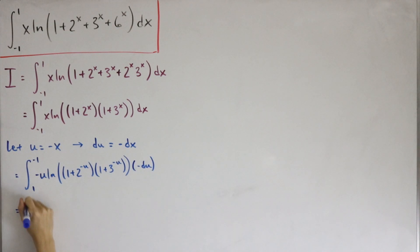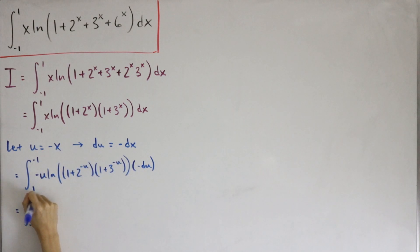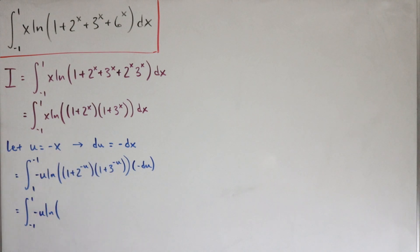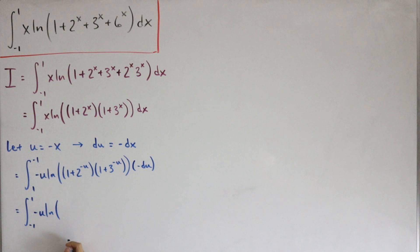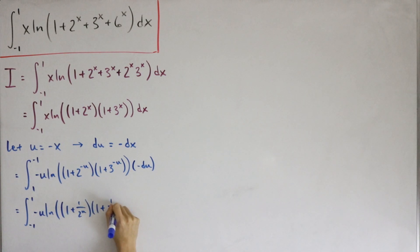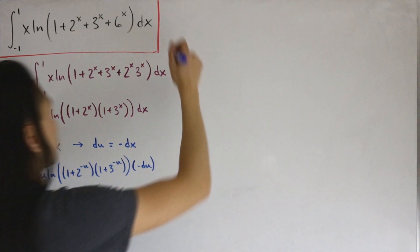We can simplify further by rewriting the negative exponents as rational functions: 2^(-u) = 1/2^u and 3^(-u) = 1/3^u. So the integrand becomes -u times the natural log of (1 + 1/2^u)(1 + 1/3^u) du, integrated from -1 to 1.